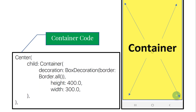We can put whatever we want inside this widget. To create a container in code, we use the child keyword and the container keyword, and we can see the decoration and other properties for this container. We start by adding a child to our container and specify the attributes there.